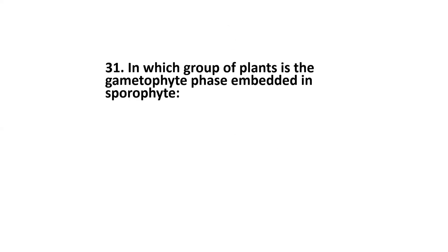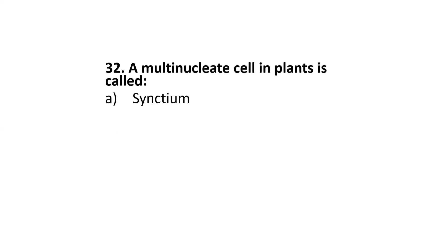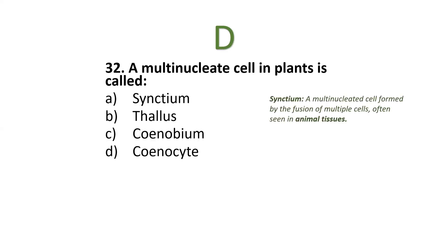Next: in which group of plants is the gametophyte phase embedded in sporophyte — bryophytes, pteridophytes, spermatophytes, or cryptogams? The correct option is spermatophytes. A multi-nucleate cell in plants is called — syncytium, thallus, synobium, or coenocyte? The correct option is D: coenocyte.